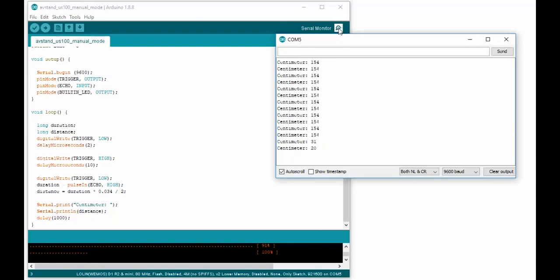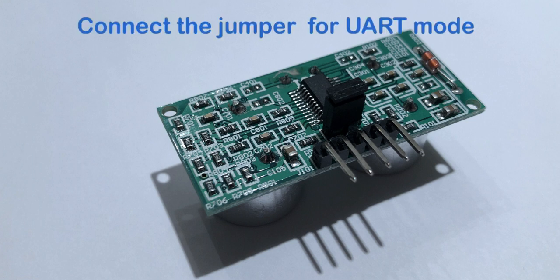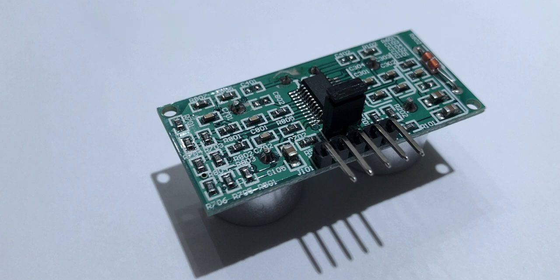But did you know that the US100 can give you an even better and more accurate measurement? In UART mode, you don't have to do the triggering and reading as you do in manual mode. The US100 delivers the result to your device even more accurately. How can it measure more accurately, you might ask? Well, speed of sound changes with temperature. And the US100 adjusts the distance by factoring in the temperature.